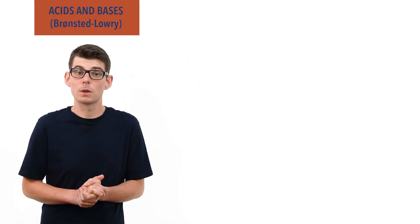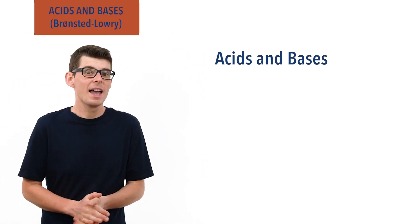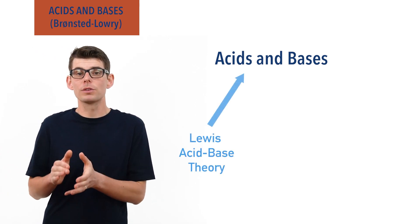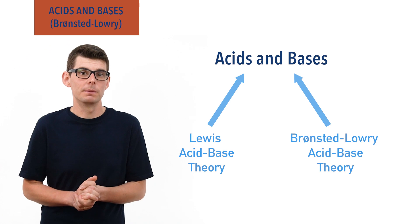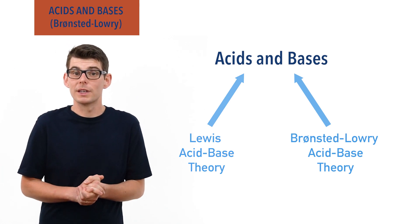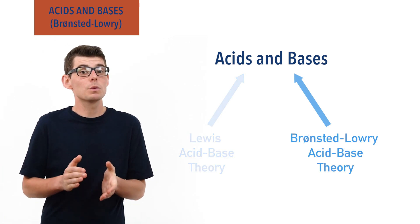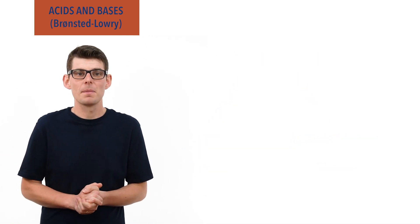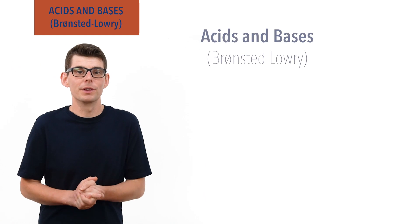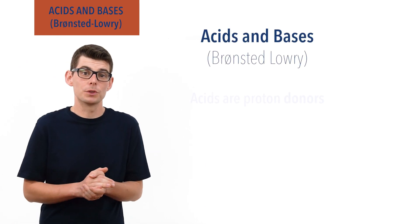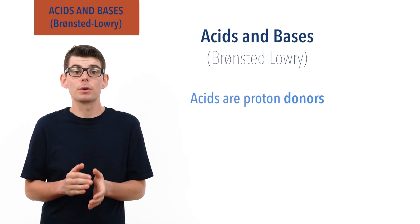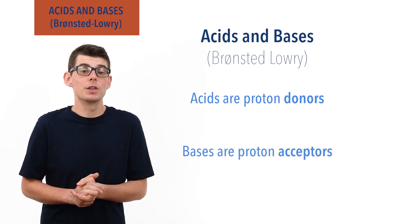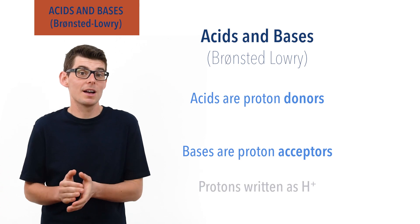Acids and bases can be quite hard to define in chemistry and there are two main definitions used: Lewis acid and base theory and the Bronsted-Lowry acid and base theory. At this level the Bronsted-Lowry acid base theory is the one most commonly taught and will be the focus of this video. In the Bronsted-Lowry theory, acids are described as proton donors and bases as proton acceptors. To make things easy when writing equations, protons are usually referred to as H+ ions.